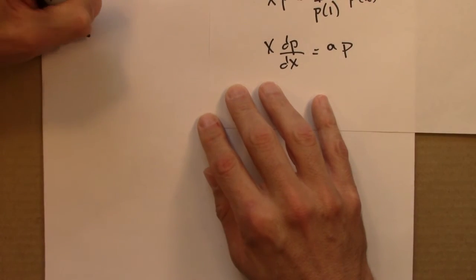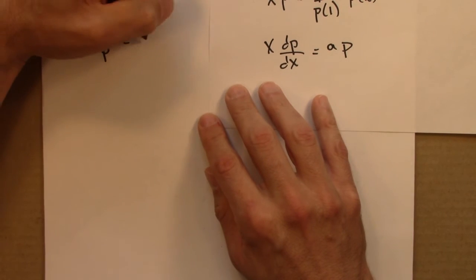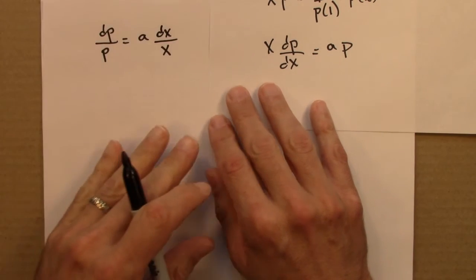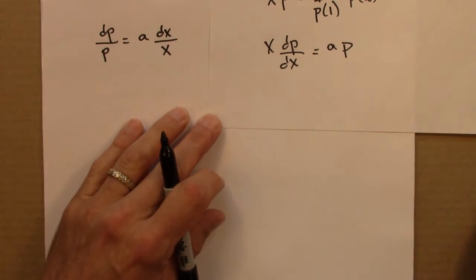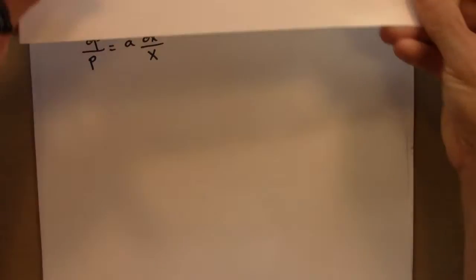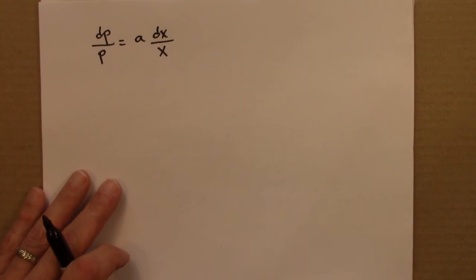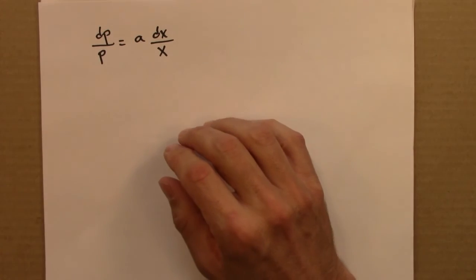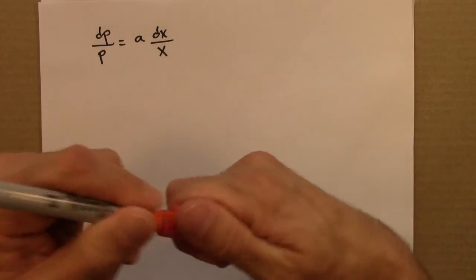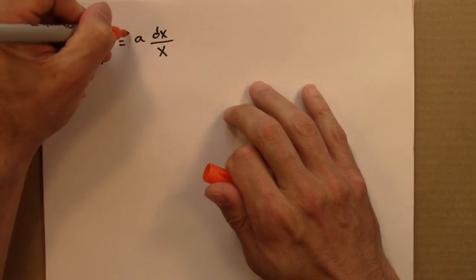So this becomes dP over P is a dx over x. So far so good. And now we need to take the integral of both sides.